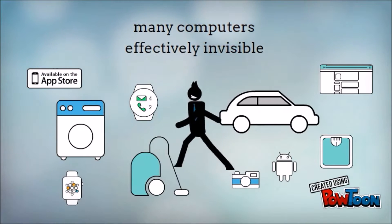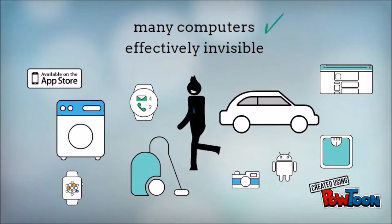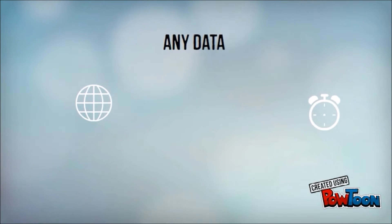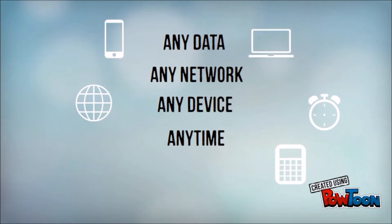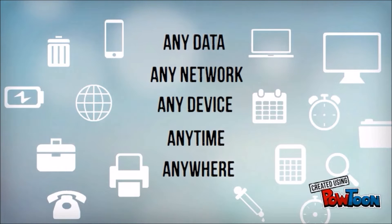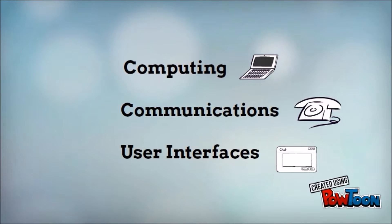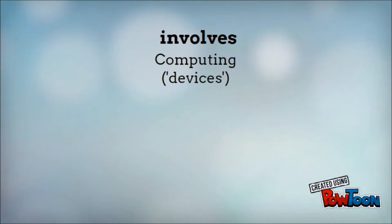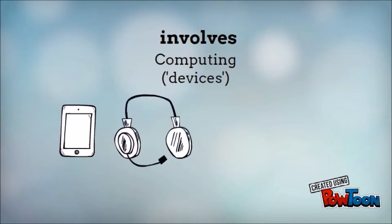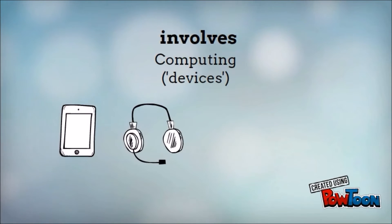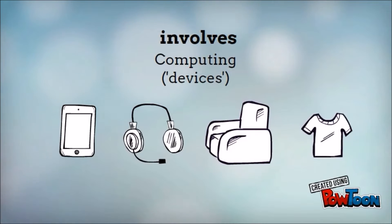Pervasive computing is the method of enhancing computer use by making many computers available throughout the physical environment, but making them effectively invisible to the user. The scenario is about sending and receiving any data through any network using any device at any time and anywhere. Pervasive computing involves three converging areas of ICT: computing, communications, and user interfaces. Computing devices are likely to assume many different forms and sizes, from handheld units similar to mobile phones to near-invisible devices set into everyday objects like furniture and clothing.